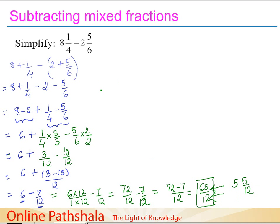What we have learned here is that the fraction being subtracted could be greater than the other, leading to a negative intermediate result. In that case, we follow this procedure of integer subtraction and then convert the answer into its proper form.